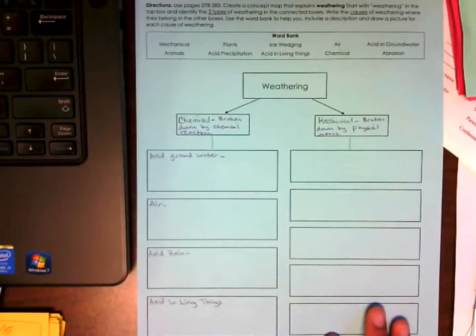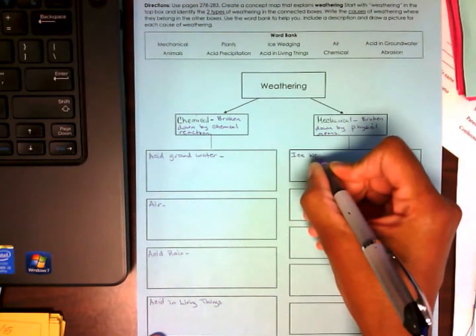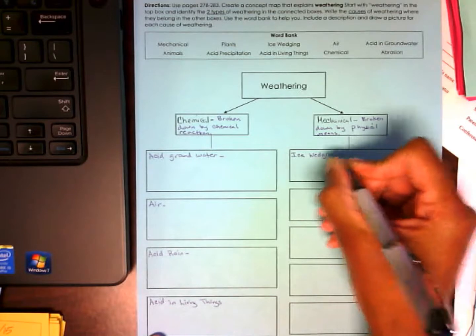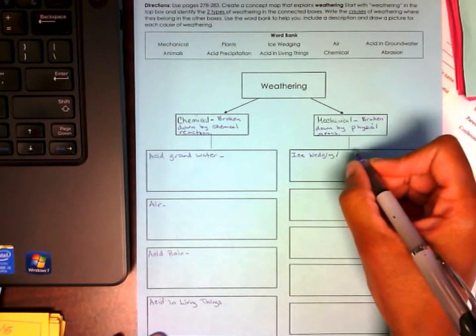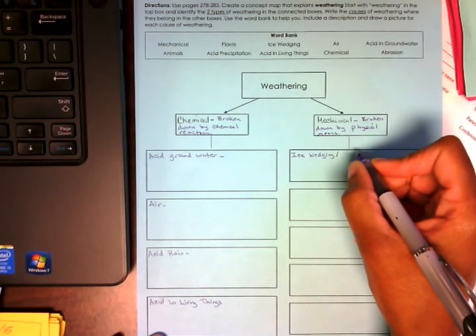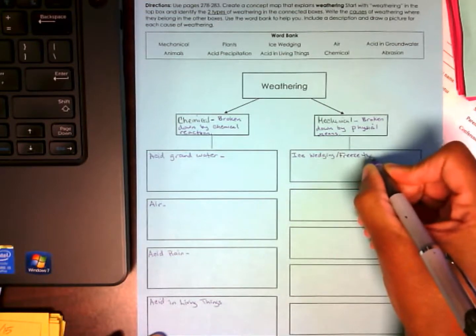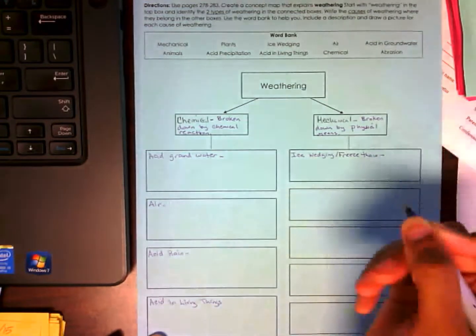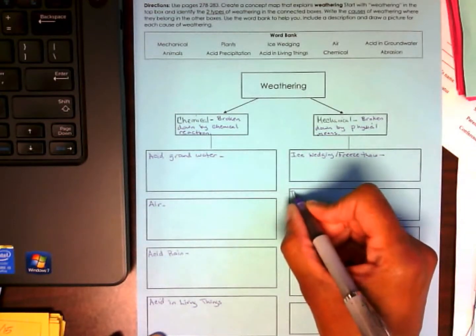So, what about mechanical? What should I put under mechanical? Let's see. Jonathan. Ice wedging. Ice wedging. Very good. Now, there's another word we can use for ice wedging that I had on the board a while ago. What's another word for ice wedging? It started with an F. Rayshawn. Frost action. Frost action. Freeze thaw. Freeze thaw. Uh-huh. What else can I put under mechanical? Chimerius. Plants. Plants. Okay.